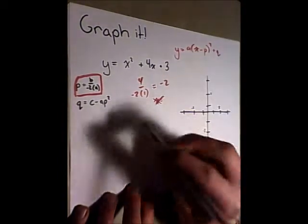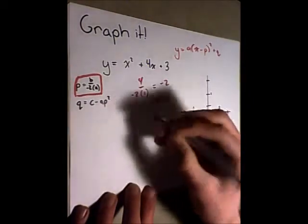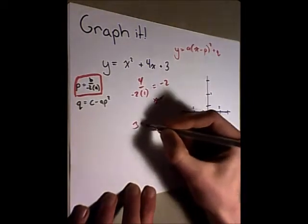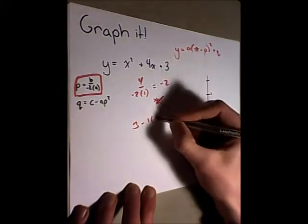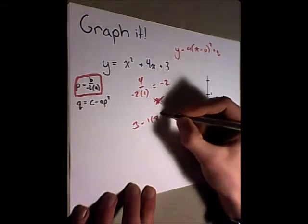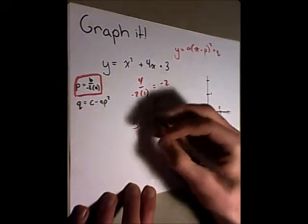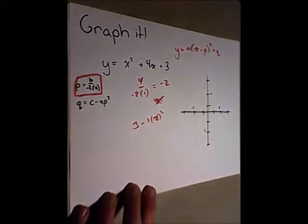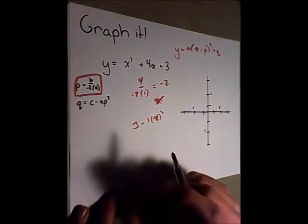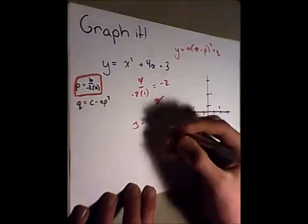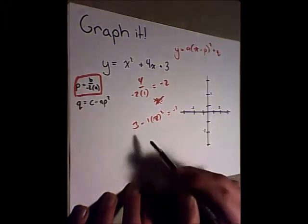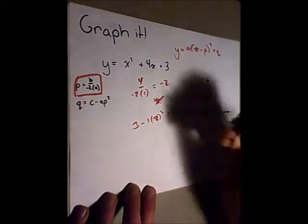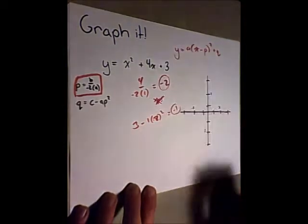Just one moment. And then to calculate our q value we go 3 minus 1 times p value negative 2 squared. And then we have this ends up equaling negative 2 squared is 4 times 1. 3 minus 4 is negative 1.